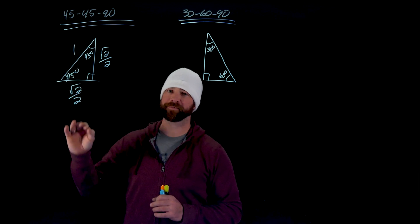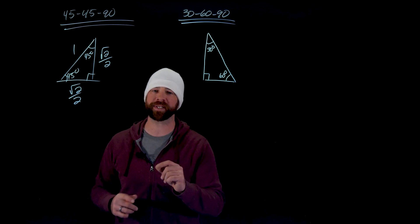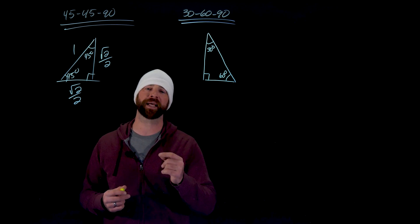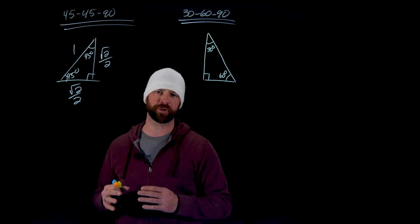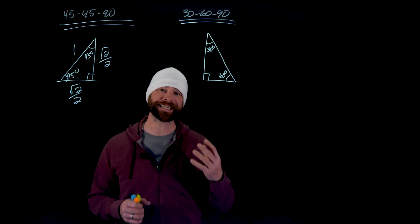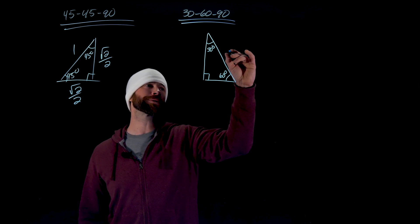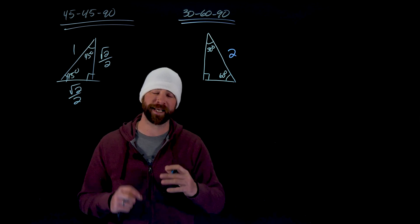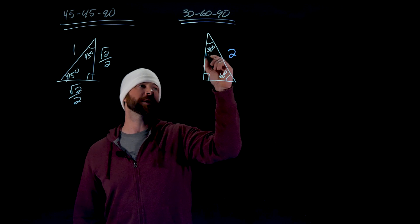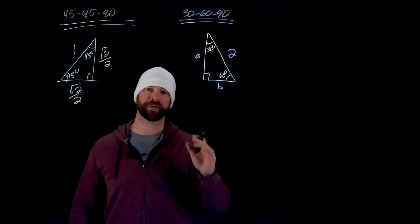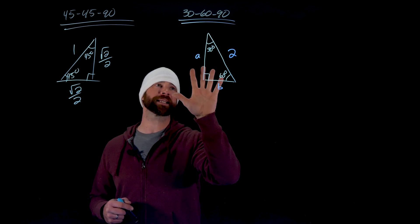We've established the 45-45-90 triangle with hypotenuse 1. Now for the 30-60-90 — this is not quite as easy. I'm looking for the base version of a 30-60-90 that I can use with similar triangle reasoning. I'll define the hypotenuse as 2 — it doesn't matter what I use since I can change the scale, but using 2 makes the proof a bit easier. The question is: what are the two legs, which I'll call A and B?